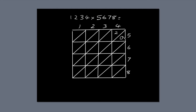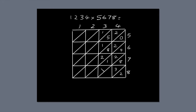4 times 5 is 20. 4 times 6 is 24. 4 times 7 is 28. 4 times 8 is 32. On to the next column. 3 times 5 is 15. 3 times 6 is 18. 3 times 7 is 21. 3 times 8 is 24.